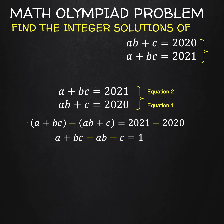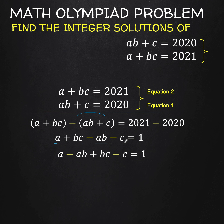Let's remove the grouping symbols. The first group has no issue since it's preceded by a plus sign. But we need to distribute the negative sign into the second group, so this becomes negative AB and negative C. The right side is equal to 1. There's a common factor A in the first and third terms, and a common factor C in the second and last terms. So let's rearrange the order and factor out A and C from these two groups.